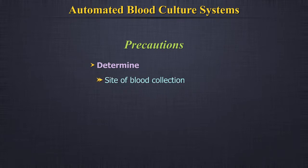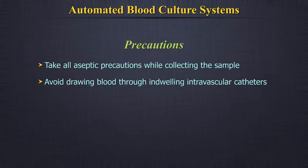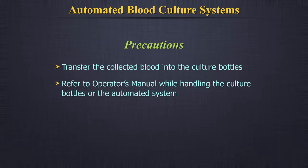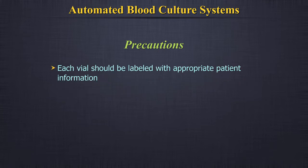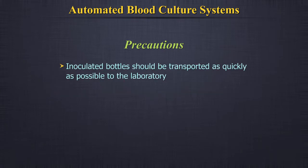Determine first the site of blood collection, the number and volume of samples that need to be collected. Take all aseptic precautions while collecting the sample. Avoid drawing blood through indwelling intravascular catheters unless blood cannot be obtained by venipuncture, as blood collected from intravascular catheters may carry a risk of contamination. Transfer the collected blood into the culture bottles as per the manufacturer's instructions. Always refer to the operator's manual while handling the culture bottles or the automated system. Each vial should be labeled with appropriate patient information, and each request slip should also have all the patient information. The inoculated bottles should be transported as quickly as possible to the laboratory; when this is not possible, store the bottles according to the manufacturer's instructions.